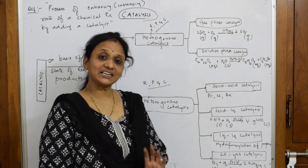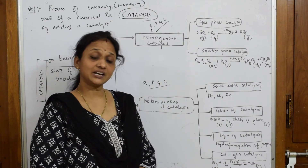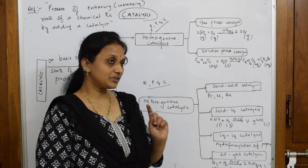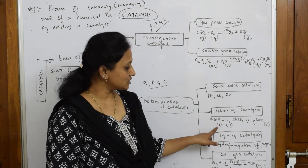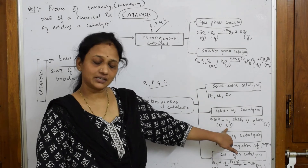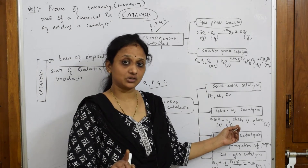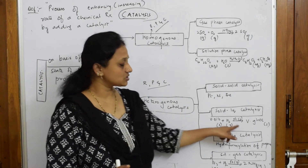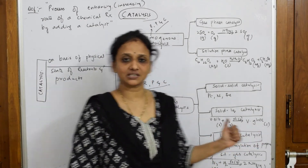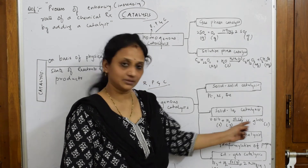For solid-liquid catalysis, consider the hydrogenation reaction — the addition of hydrogen, not hydration. In hydrogenation of vegetable oils, vegetable oil (liquid phase) is combined with hydrogen gas (gaseous state) in the presence of nickel catalyst (solid phase). All three phases are different — liquid, gas, and solid — so it falls under heterogeneous catalysis. The product is vegetable ghee, which is in solid state.